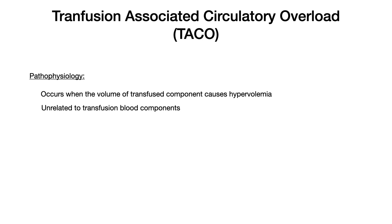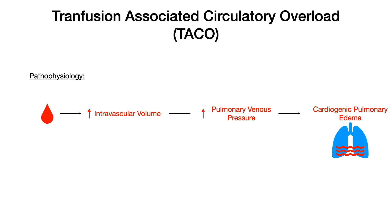First we'll start with TACO. TACO stands for Transfusion Associated Circulatory Overload. This occurs when the volume of the transfused component causes hypervolemia in the recipient. This is unrelated to the transfusion blood components themselves — that's a pretty important distinction. As you'll see with TRALI, that has to do with an immune reaction to the blood itself. In TACO, this typically occurs in patients with underlying cardiac disease. The blood is given, that increases intravascular volume, which in turn increases pulmonary venous pressure, and you end up with cardiogenic pulmonary edema.